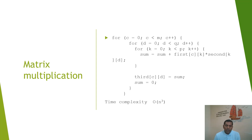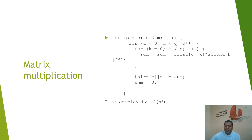Let us consider one more well-known algorithm: matrix multiplication. In matrix multiplication, we multiply the first matrix with another matrix. A small code is presented here to show how matrix multiplication is executed. We have a first matrix and a second matrix; the indices of the two-dimensional arrays are multiplied and their results added to find the third matrix. Using three nested loops with respective indices, we can define the time complexity of this matrix multiplication as O(n³).